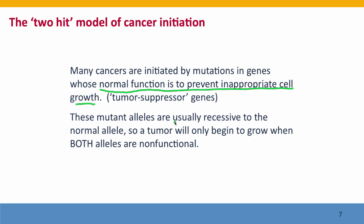Because these mutant alleles are usually recessive to the normal allele, a tumor is only going to begin to grow if both alleles of this gene are nonfunctional. That's the two hits. The gene has to take two hits before a tumor will develop — a hit in each allele.